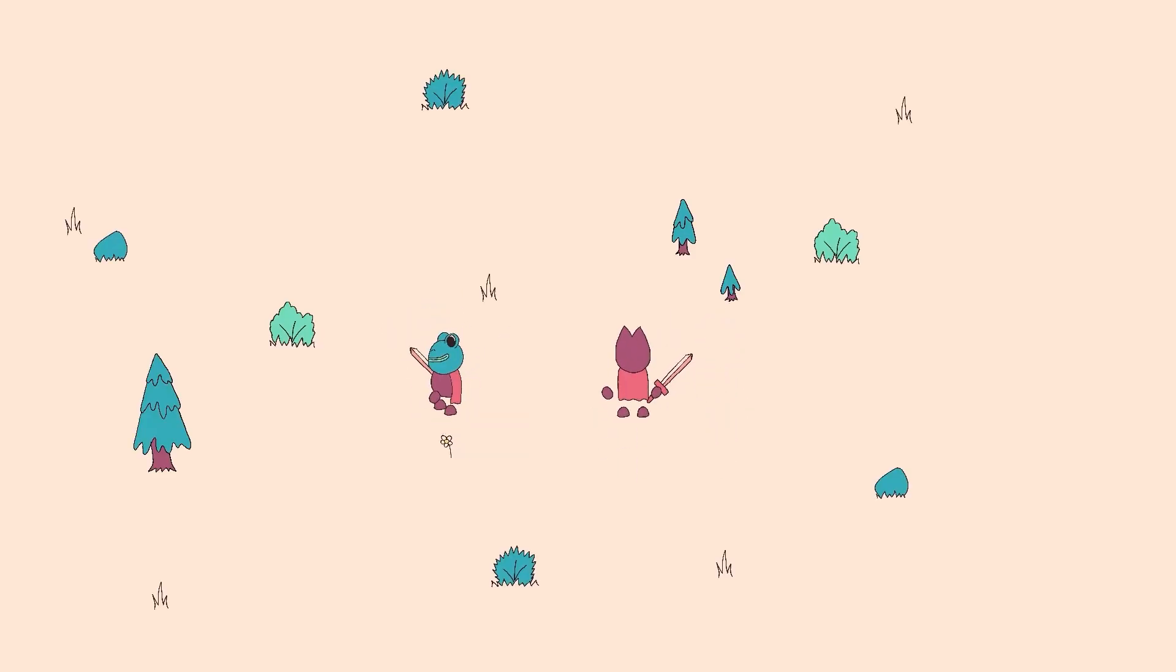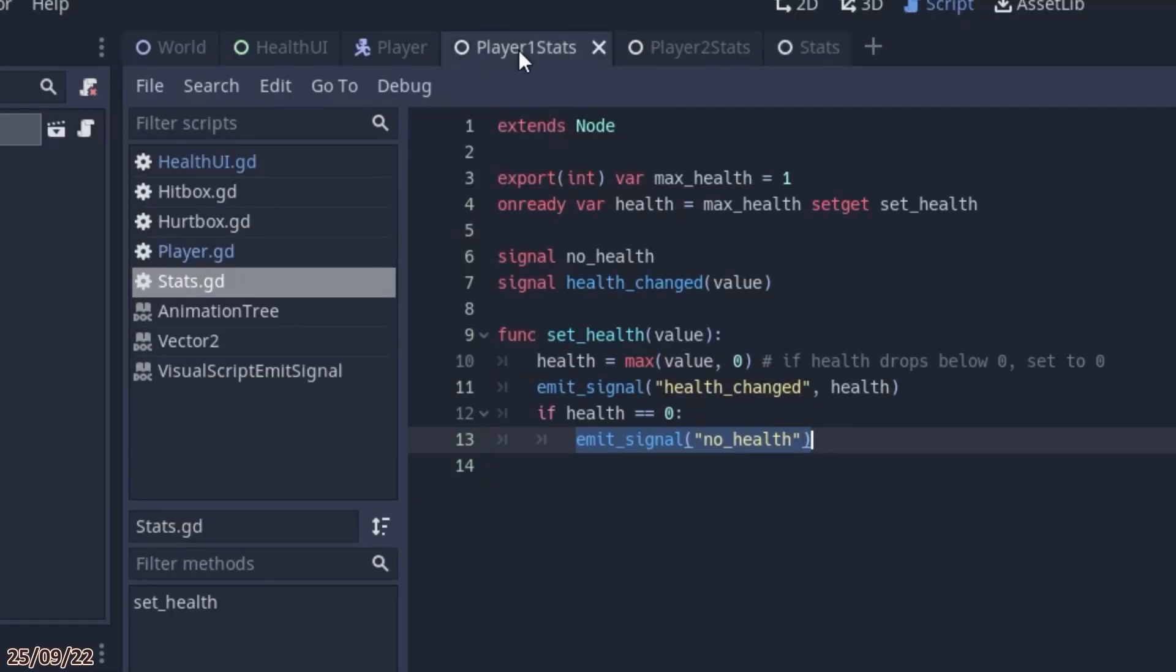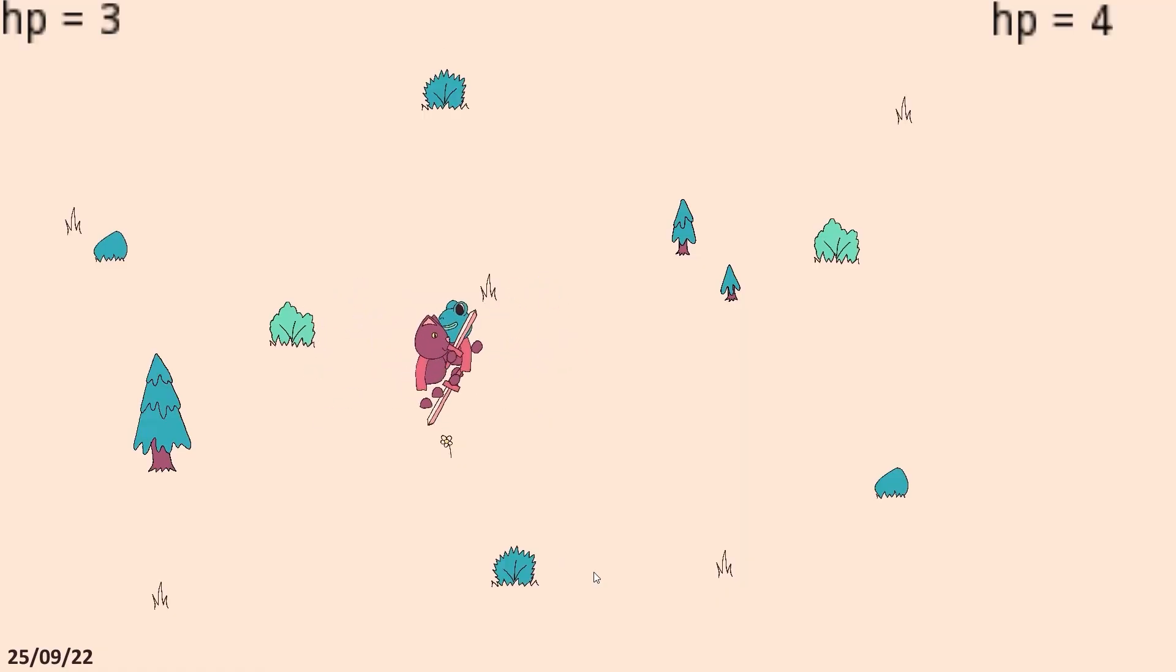Having hit detection is all well and good, but it doesn't actually do anything. The first thing I did was set up a stats script to keep track of the player's health, save it on a generic parent scene, and created two child scenes, one for each player, which inherit the functionality of the script, but allows for the values such as current health and max health to be changed independently. Now, when a hit is detected on a player, a health point is taken off, and if the health reaches zero, the player quite simply ceases to exist.